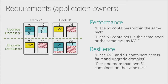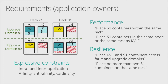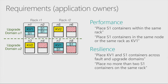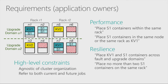Going back to the requirements: we want expressive constraints — both within the same application and across different applications — and different constraint types: affinity, anti-affinity, and cardinality. We also want high-level constraints, meaning we want to be agnostic to cluster organization. We don't want the user to specify rack one or rack two based on cluster internals we don't want to reveal. We also want to refer to both current and future jobs.